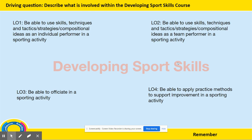Moving on to the Developing Sport Skills unit, this is split up into four different LOs and involves quite a lot of practical. LO 1 looks at an individual sport such as tennis or badminton. LO 2 looks at a team sport such as football, cricket, rugby, or hockey. LO 3 requires you to officiate — so be the referee or umpire — in a sporting activity. And LO 4, you will reflect on and essentially summarise how you've done in those practical tasks, highlighting different skills, whether those skills are strengths or weaknesses, and then finding drills which target those weaknesses.